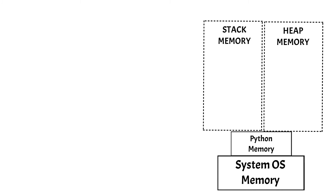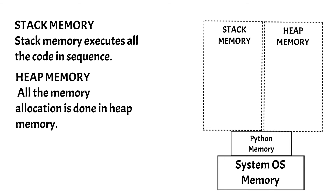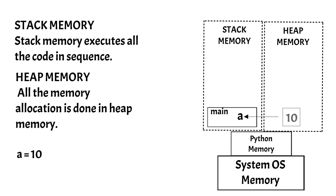Now let us understand what is stack memory and heap memory. The stack memory executes all the code blocks like functions, classes, or any line of code written in a Python source code. On the other hand, all the memory allocation is done in the heap memory. So for example, if you have created a variable A and assigned it with value 10, then the value — which is an integer object — will get created into the heap memory, and the reference of that object, which is A, will be stored in the stack memory.